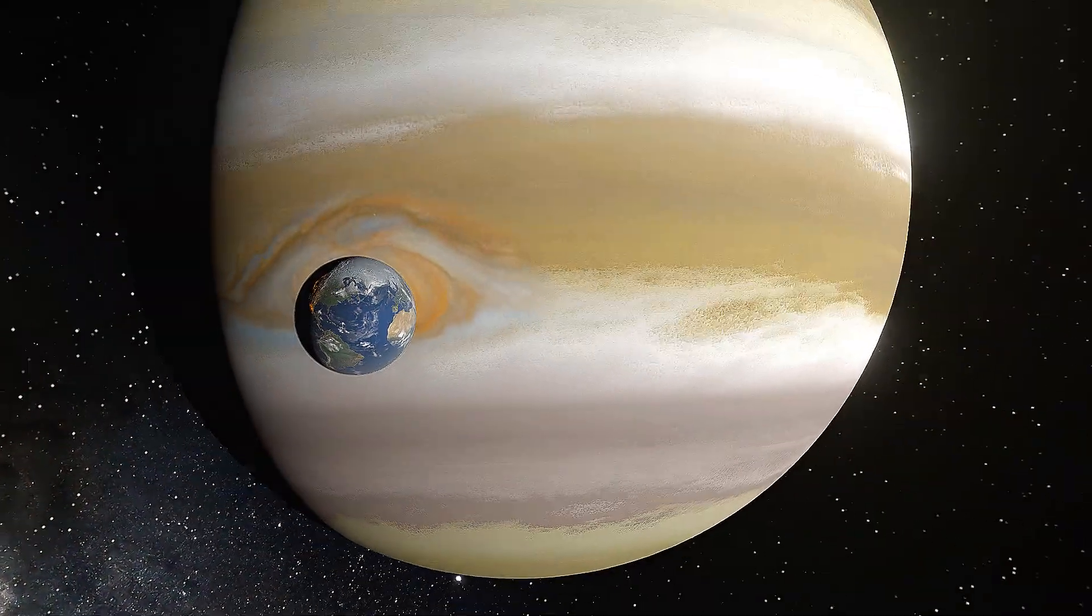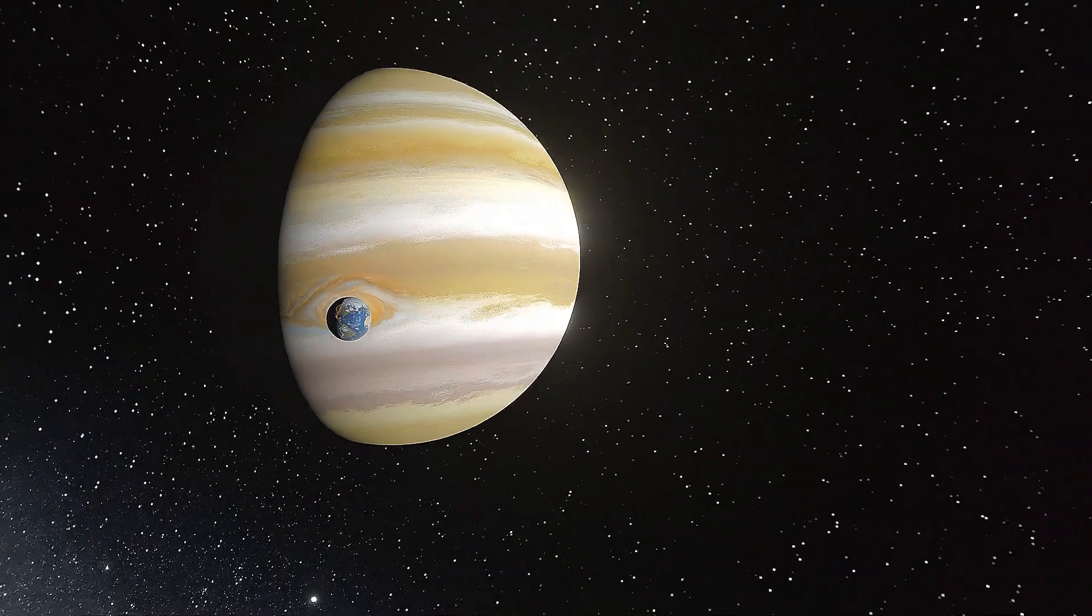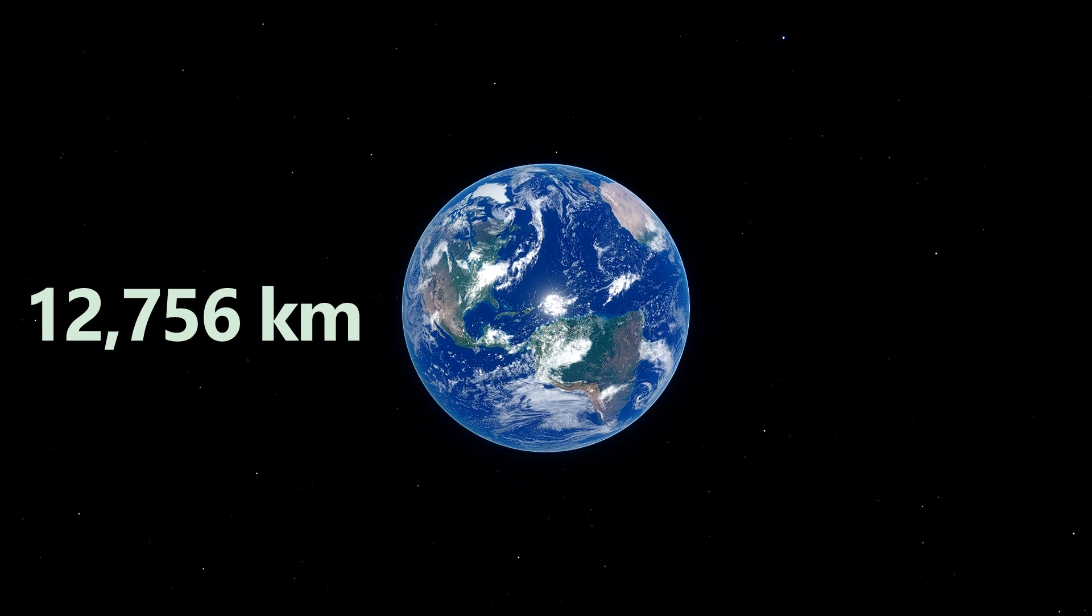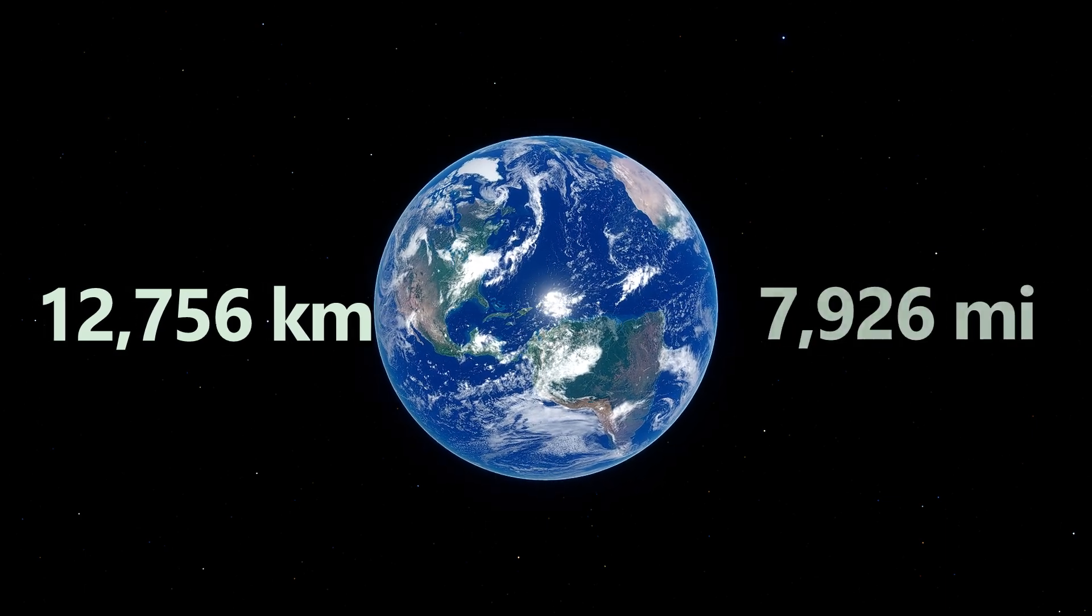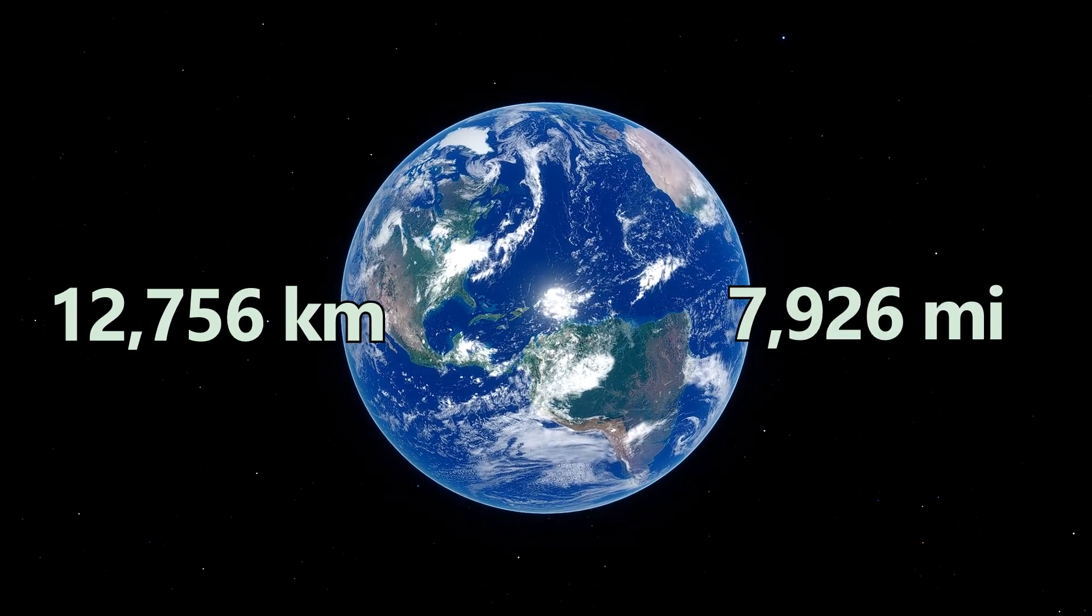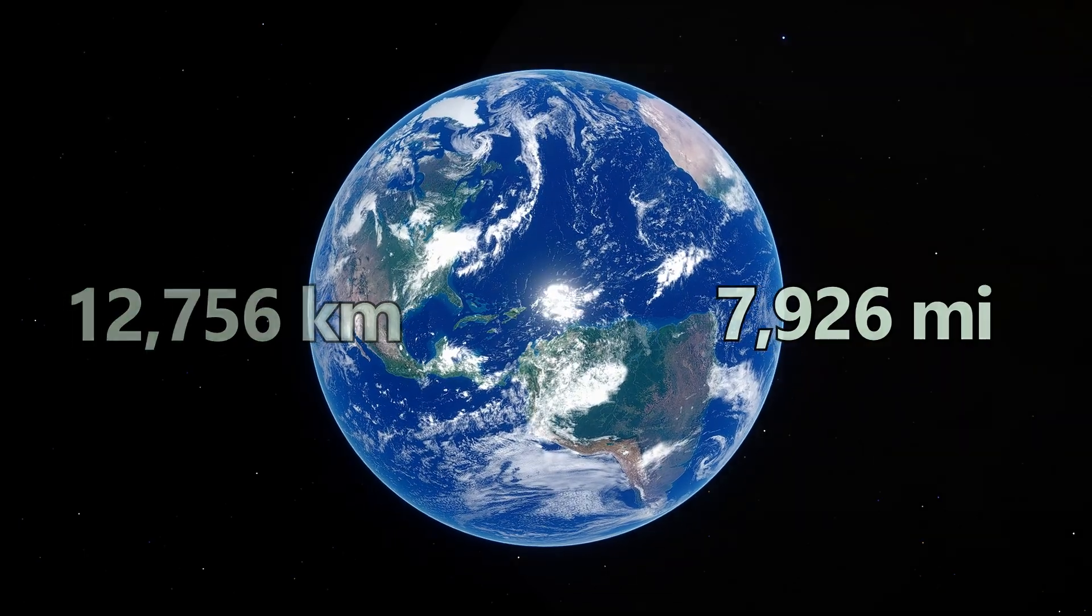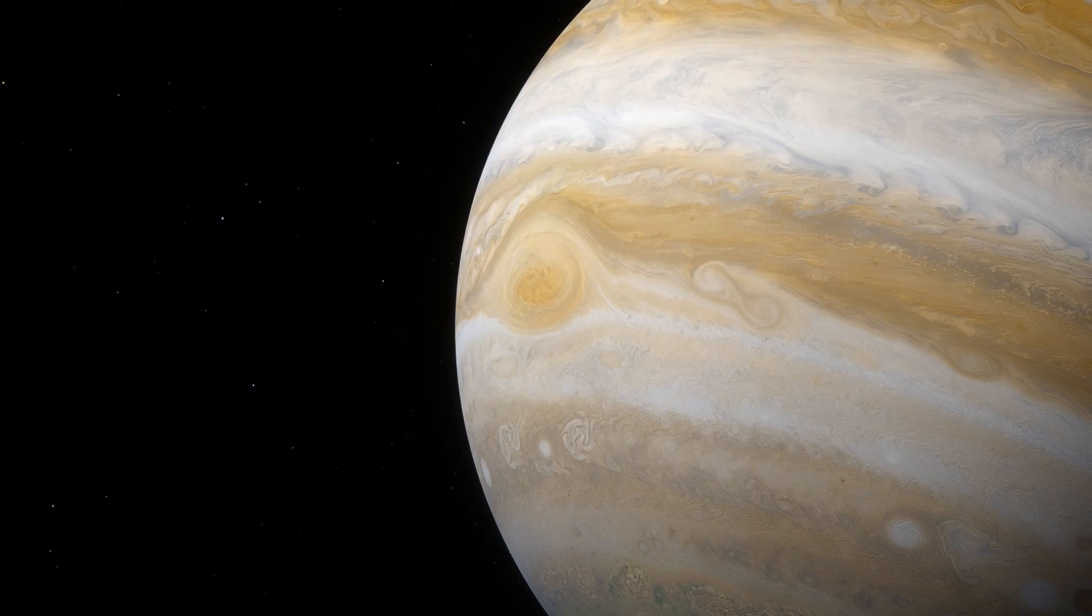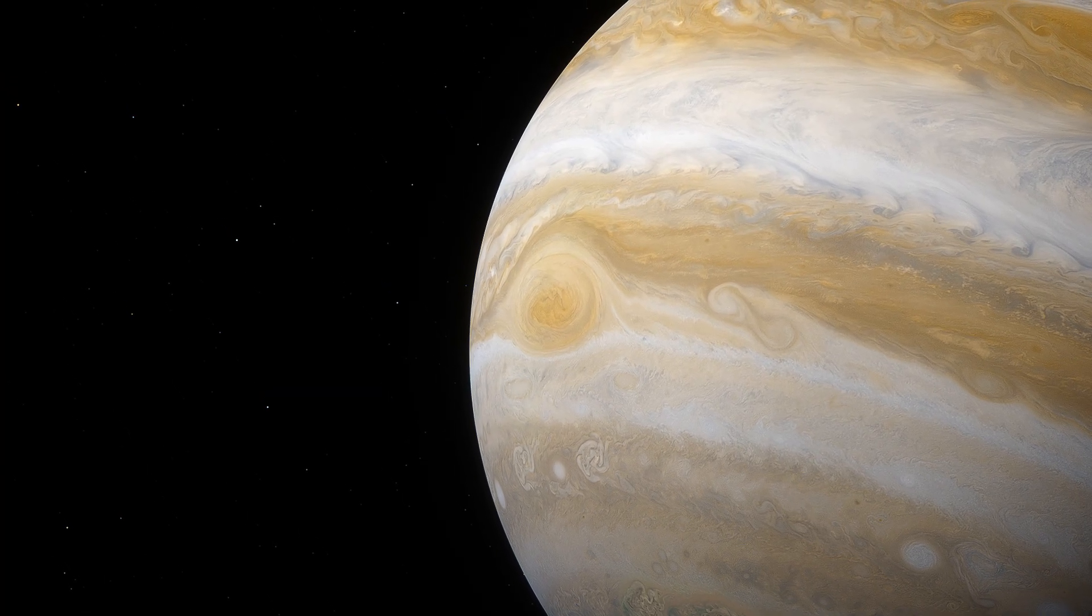This colossal storm is so large that it could easily envelop the entire planet Earth, which has a diameter of roughly 12,756 kilometers or roughly 7,926 miles. Its size has even changed over time, but it remains the largest storm ever observed in our solar system.